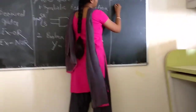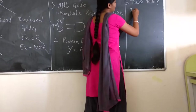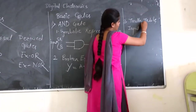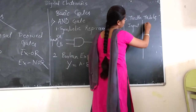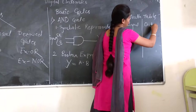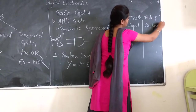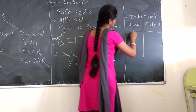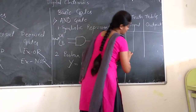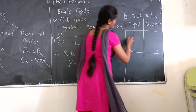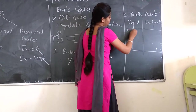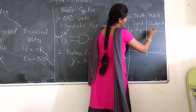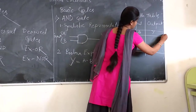Truth table is nothing but the relation between input and output. As in the expression we have two inputs A and B, and one output.